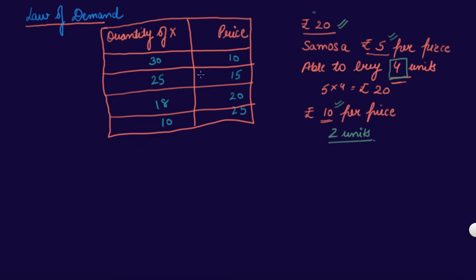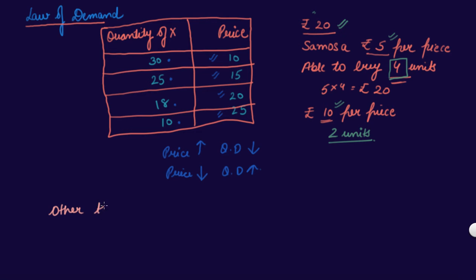This is how the Law of Demand works. As the price of the product increases, the quantity demanded decreases. With the rise in price, the quantity demanded falls; with the fall in price, the quantity demanded of that product rises. This is your Law of Demand — other things being constant.